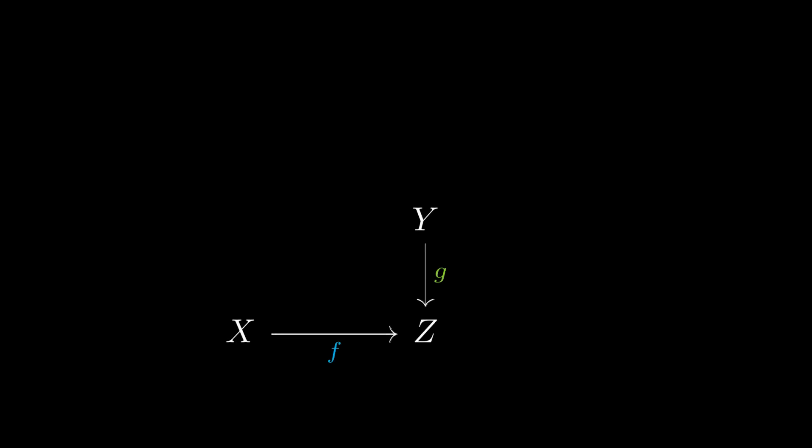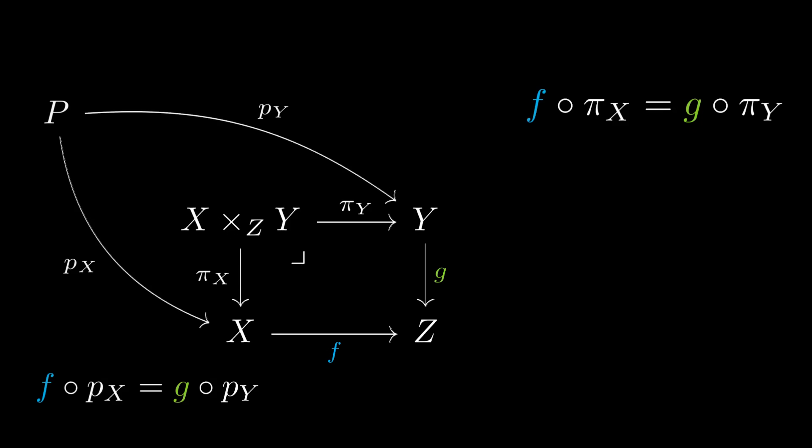For example, if X and Y both map into Z, then we can contemplate the fiber product of X and Y over Z, which is the universal object equipped with projection maps into X and Y such that the two paths to Z evaluate to the same map, where being universal means that any other object which projects onto X and Y in the same way must map uniquely into the fiber product compatibly with its own projections.